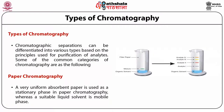Chromatographic separations can be categorized into various types based on the principle used for purification of the analyte. Some common categories include: paper chromatography, which uses an absorbent paper as the stationary phase and a suitable liquid solvent as the mobile phase.